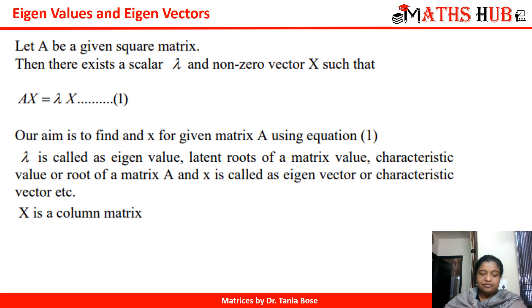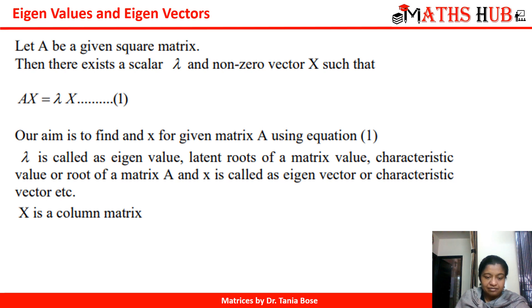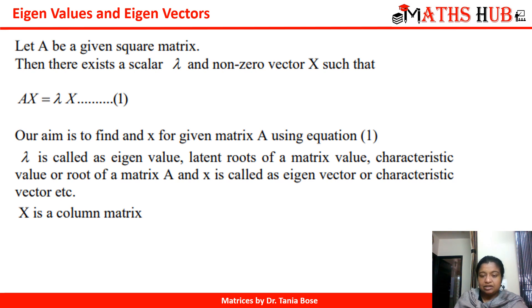How do we represent it formally? We say: let A be a given matrix, let there be a scalar lambda and a non-zero vector x such that Ax = λx. Our aim is to calculate x and lambda. Lambda has different names — it is called the eigenvalue, but also the latent root or characteristic root for matrix A. Similarly, x is called the eigenvector or characteristic vector, and this vector is always a column vector.